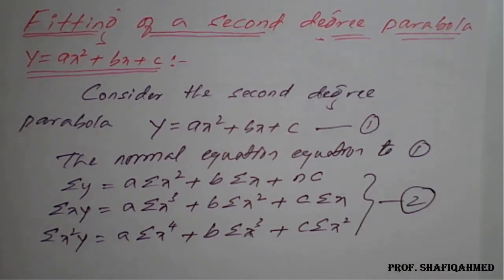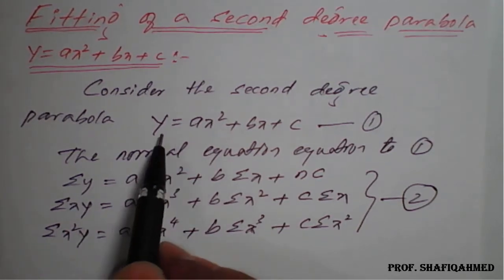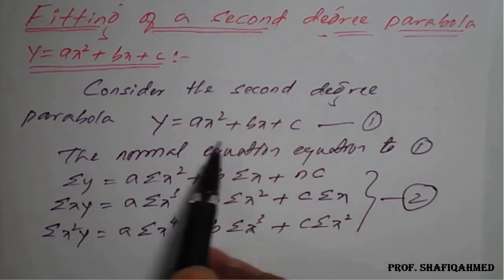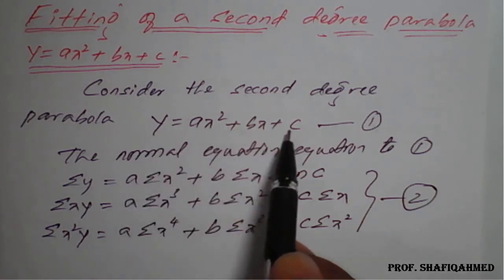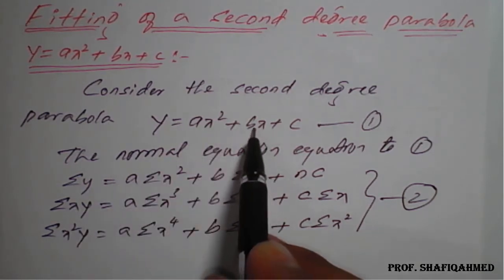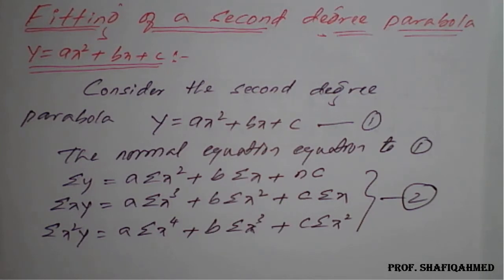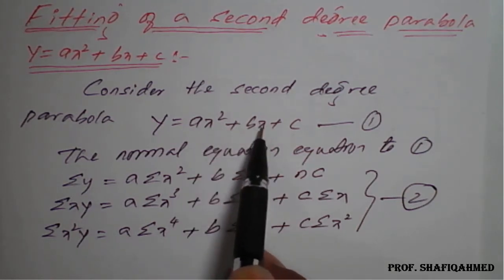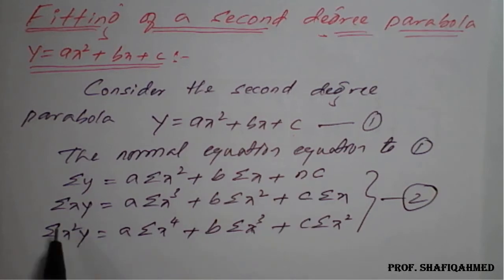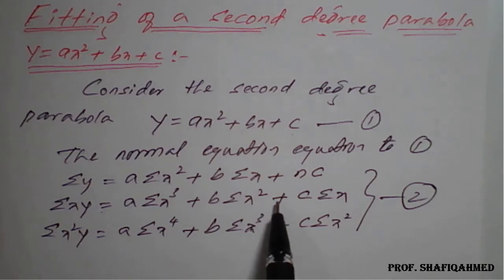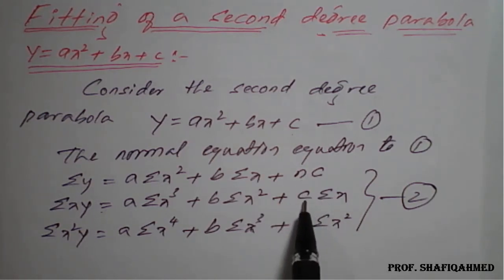To recap: this is the given second order parabola, and for it we prepare three normal equations. First, multiply summation on both sides: summation y = a·(summation x²) + b·(summation x) + nc. We have two variables on the right-hand side, so first multiply x to the first equation: summation(xy) = a·(summation x³) + b·(summation x²) + c·(summation x).